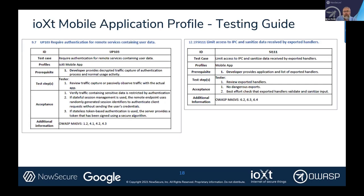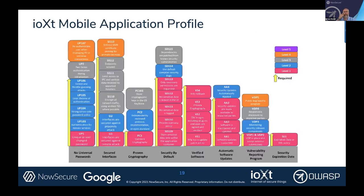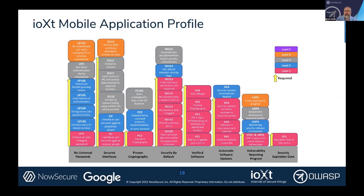Any development team using the MASVS can very easily move into and take advantage of IOXT certification because there's such commonality between the two — they just need to adapt to some unique differences. The mobile application profile has eight sections at the bottom, and in each one there is a stack diagram representing different levels. The levels escalate as you go up, with deeper and more sophisticated requirements achieving a higher degree of security certification.